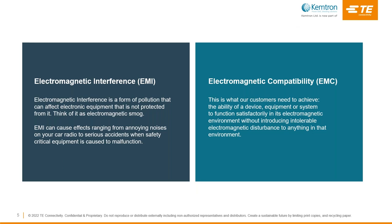As a starting point, we need to understand electromagnetic interference and electromagnetic compatibility. Electromagnetic interference is a form of pollution that can affect electronic equipment that is not protected from it — think of it as an electromagnetic smog. EMI can cause effects ranging from annoying noises on your car radio to serious accidents when safety-critical equipment is caused to malfunction. Electromagnetic compatibility is what our customers need to achieve: the ability of a device, equipment, or system to function satisfactorily in its electromagnetic environment without introducing intolerable electromagnetic disturbance to anything in that environment.